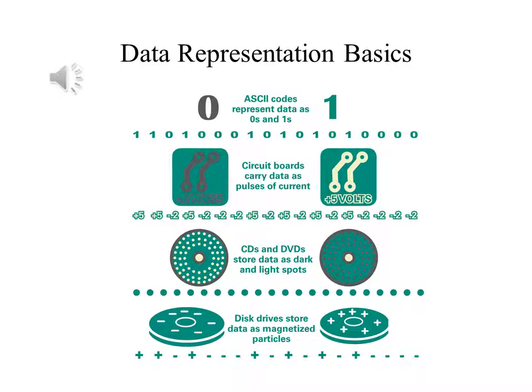Here you can see examples of how data can be represented. These all rely on the idea that everything is stored as a 1 or a 0, but there are clearly different ways to represent 1 or 0. It can be 5 volts or negative 0.2 volts in a circuit, light or dark spots on a CD or DVD, or magnetized particles on a disk facing either the North Pole or the South Pole.